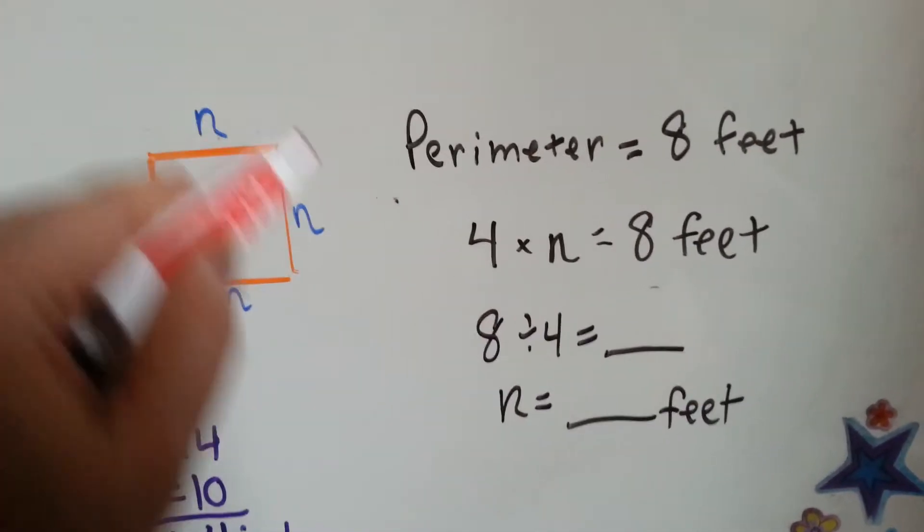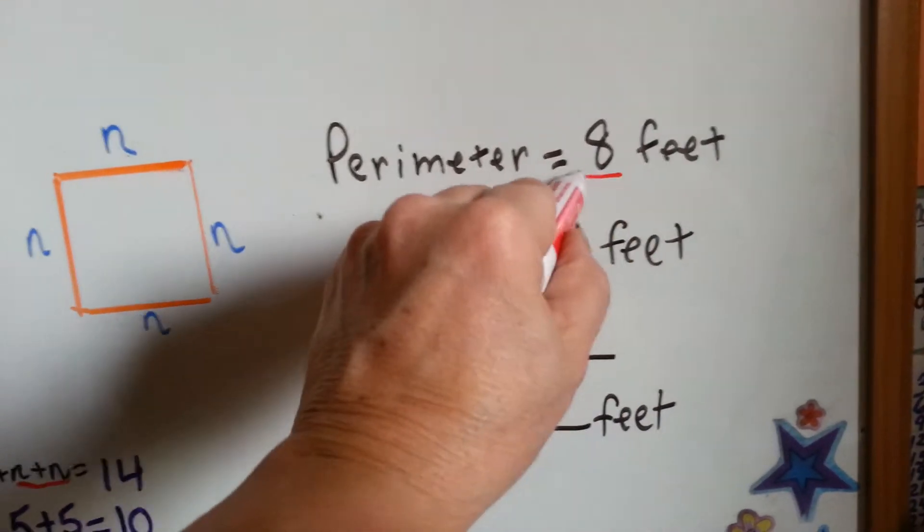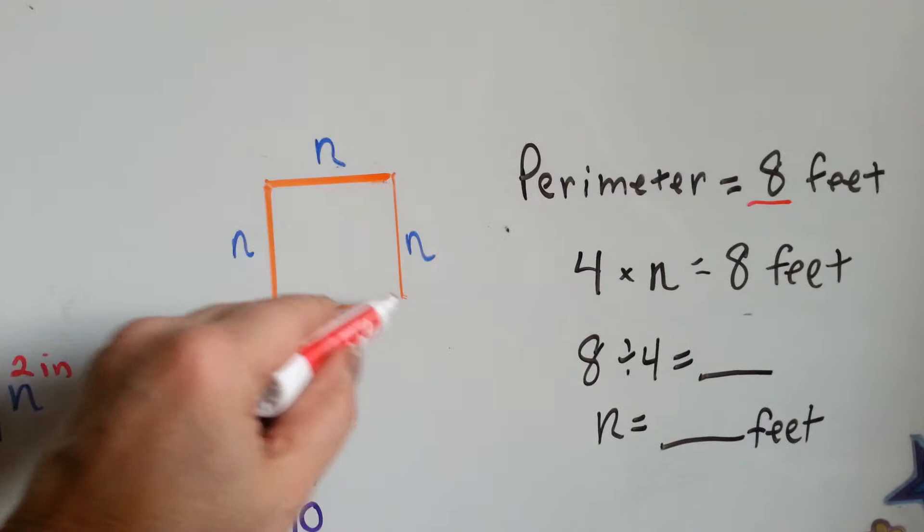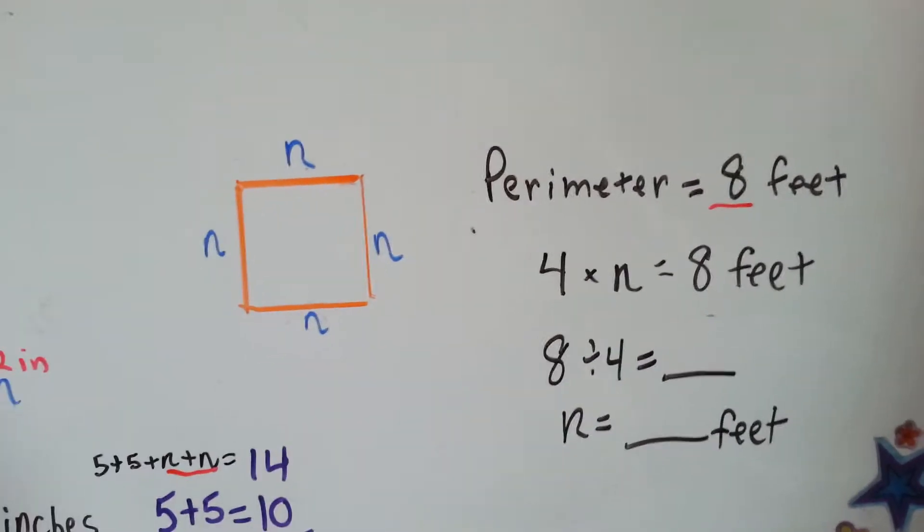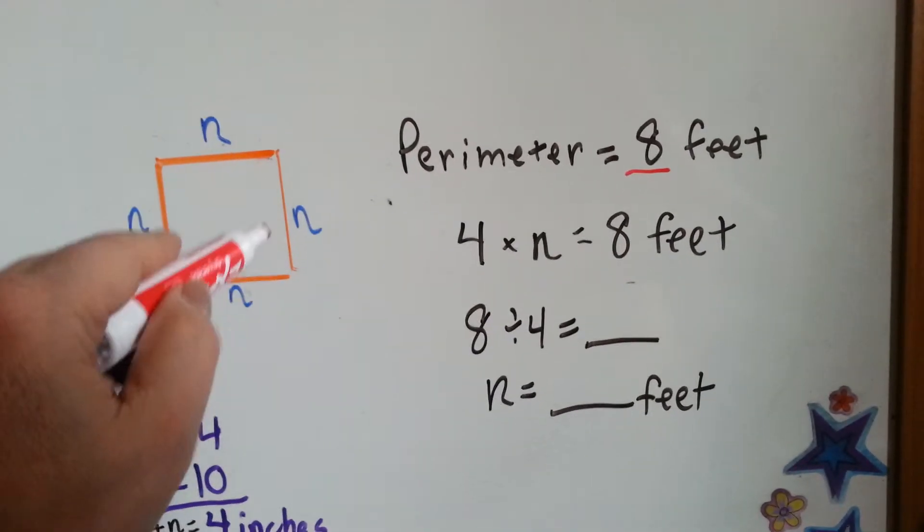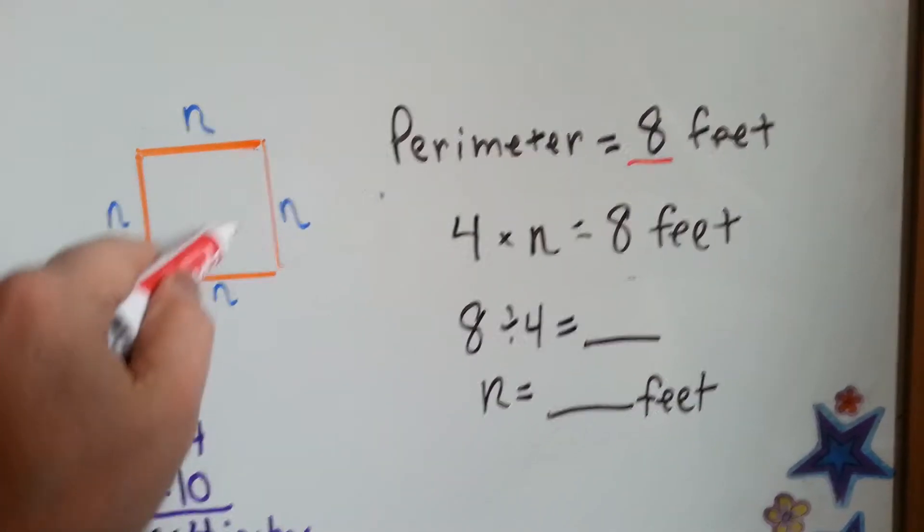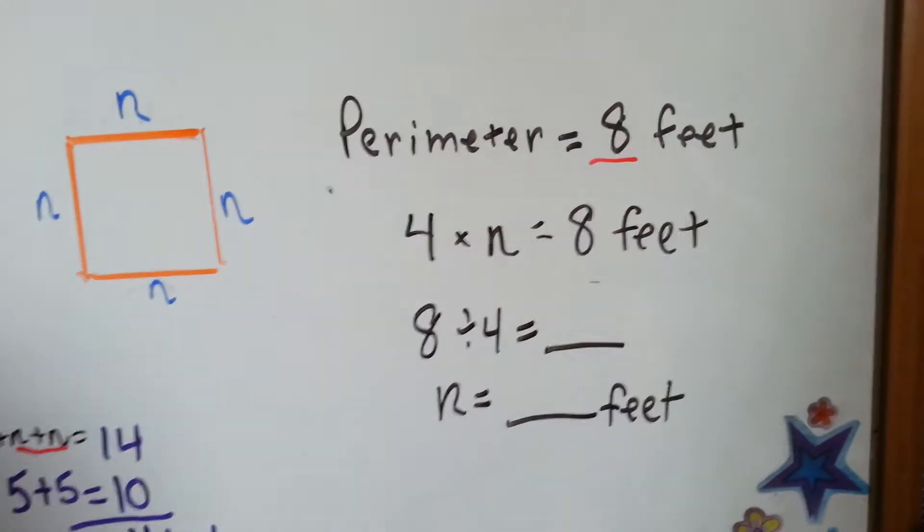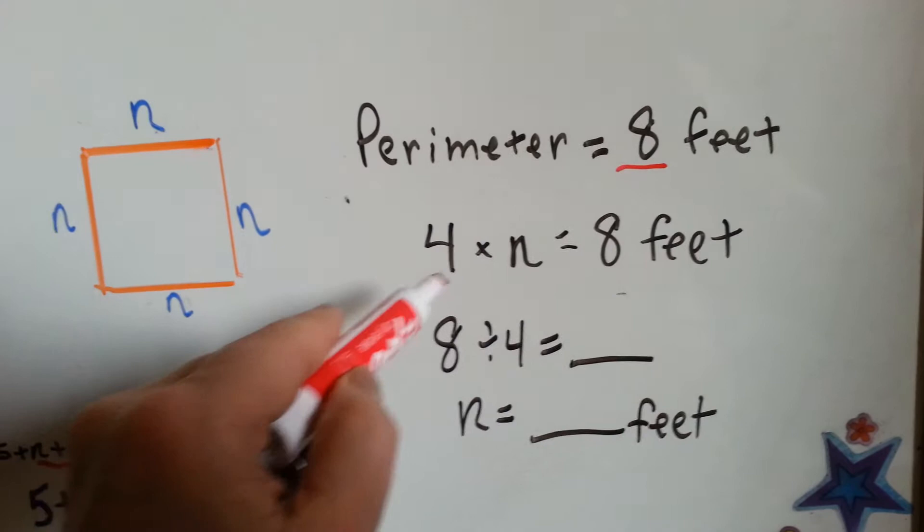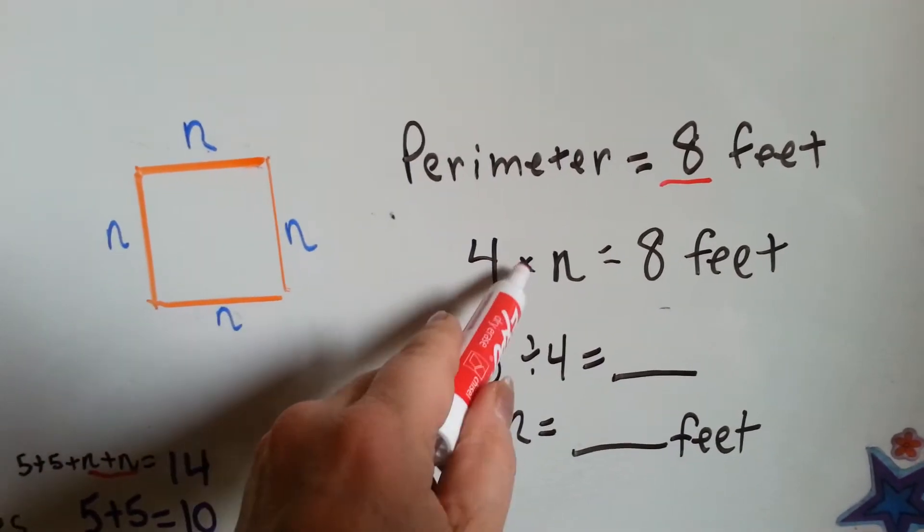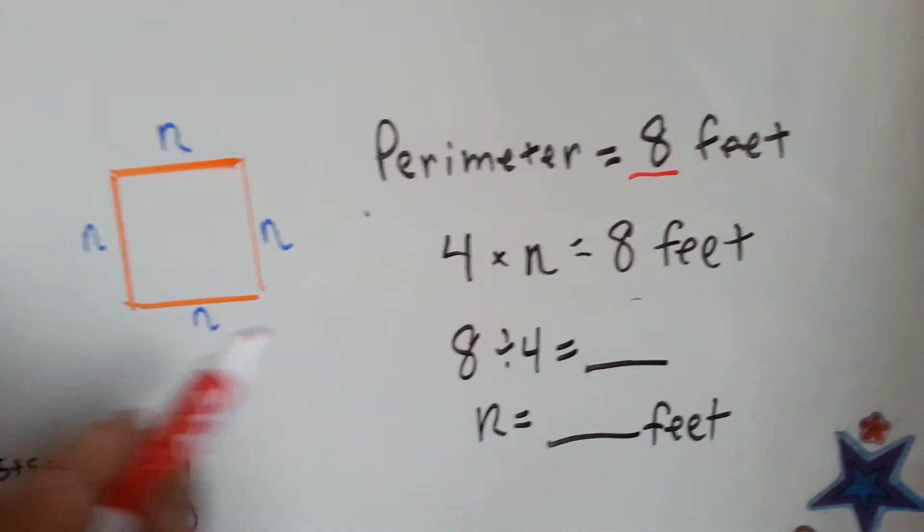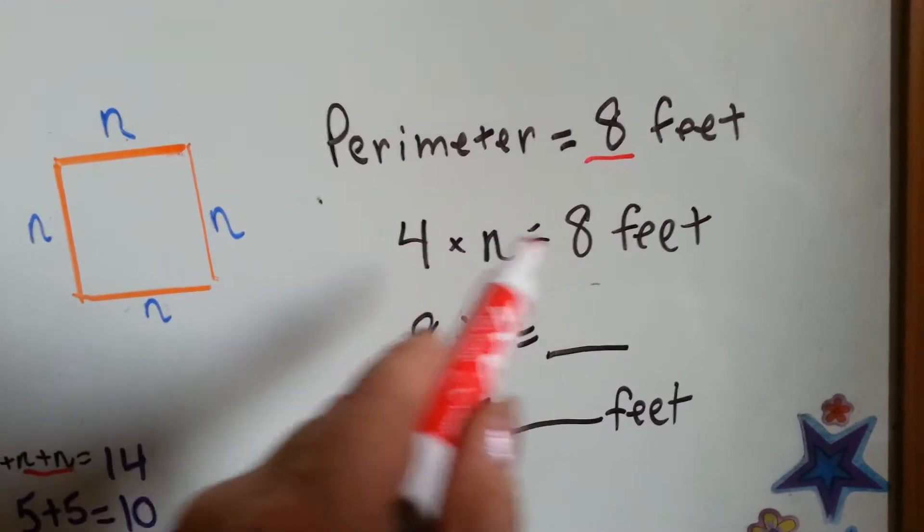Now we don't have any numbers around it. All we know is that the whole thing equals 8 feet. Now we can look at this and tell that all the sides are the same. So that's going to help us knowing they're all the same, because whatever these are, all 4 of them are the same number that equal 8. And I bet you can already figure this out, right? So what we do is we say 4 times n equals 8 feet. 4 times the n equals 8 feet. 4 times what is 8?